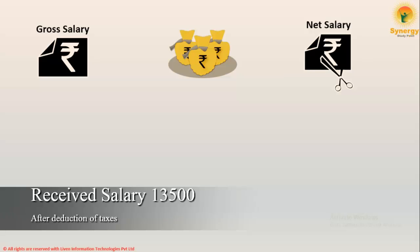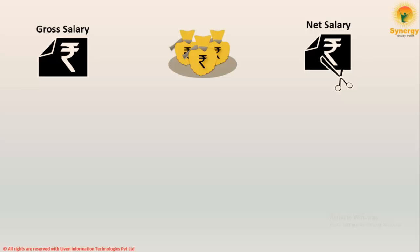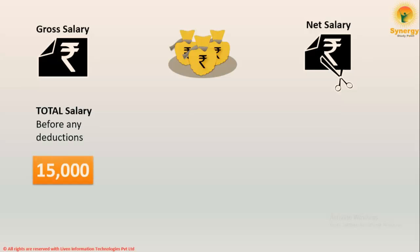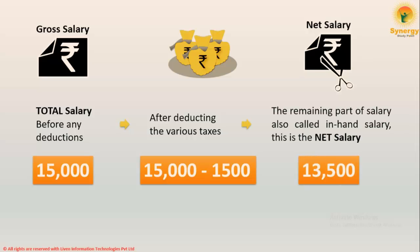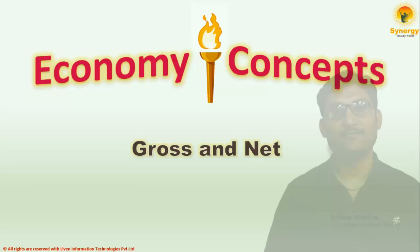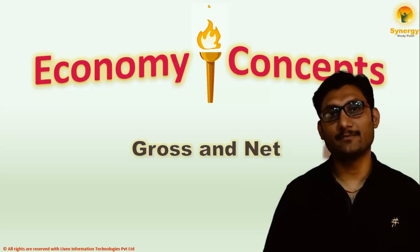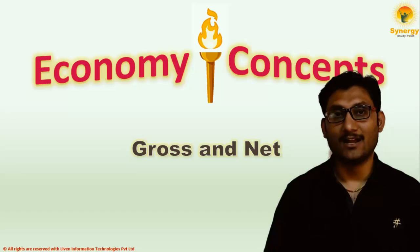What the company paid you was the gross salary. To see it clearly: total salary before any deductions was ₹15,000. After deducting various taxes — approximately 10%, which is ₹1,500 — you get ₹15,000 minus ₹1,500, which gives you the remaining part of the salary, also called the net salary, which was ₹13,500.